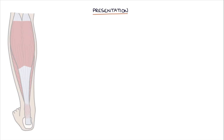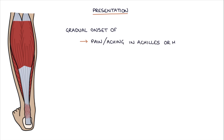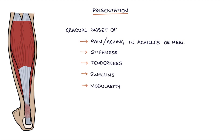The typical presentation is with a gradual onset of pain or aching in the Achilles tendon or the heel of the foot, particularly with activity. There may also be stiffness, tenderness, swelling, and nodularity of the tendon on palpation.